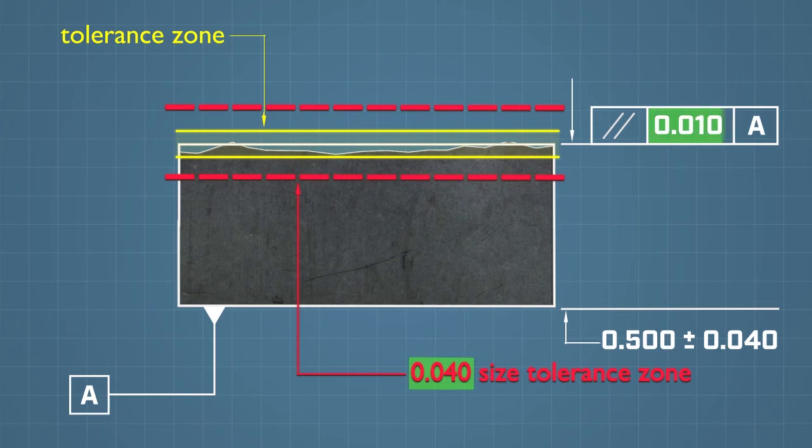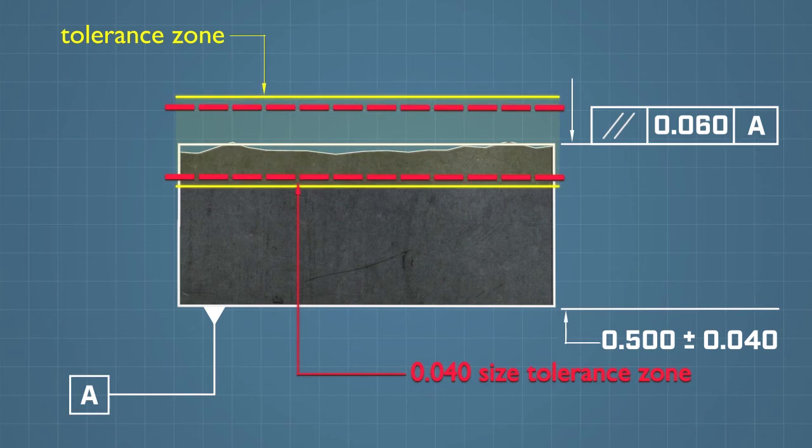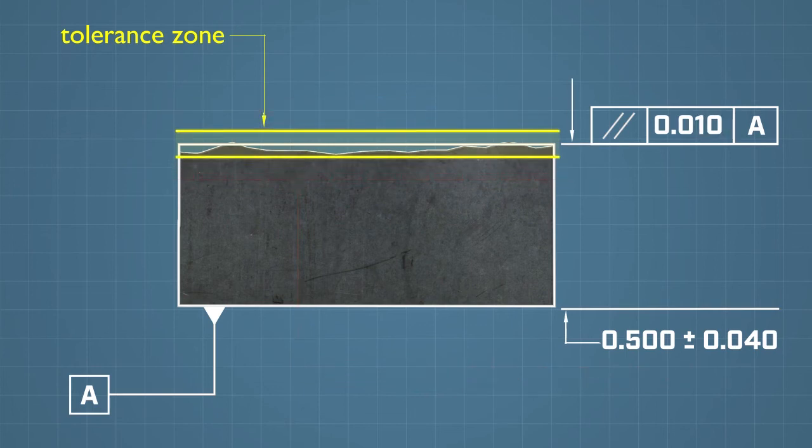For this reason, a parallelism tolerance will always be less than the total size tolerance. If it were the same, it would be a redundant specification, and if it were greater, it would have no effect because the size tolerance must be maintained.